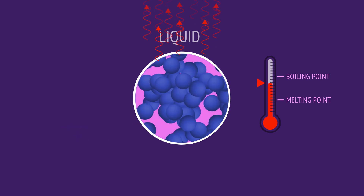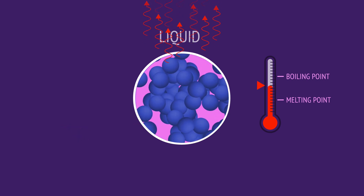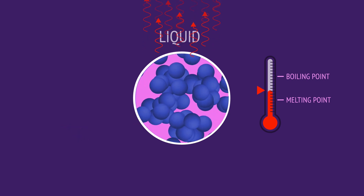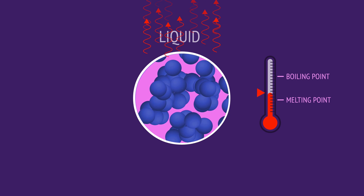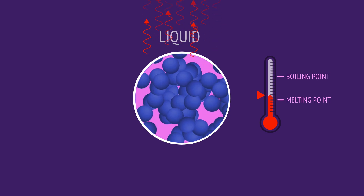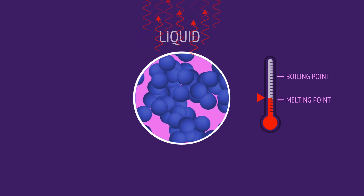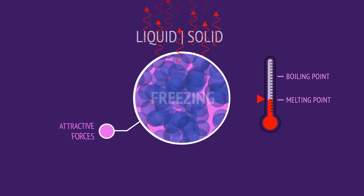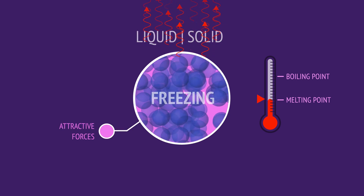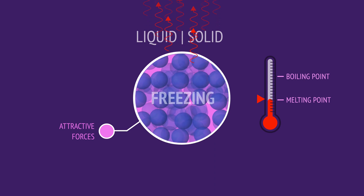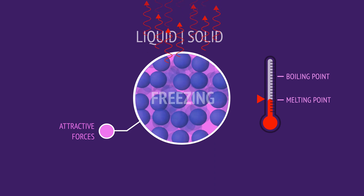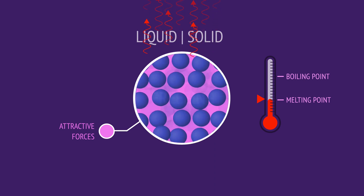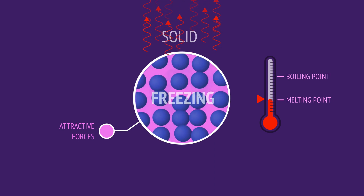When a liquid cools, heat is released, slowing down the particles and reducing the temperature. As the temperature falls to the melting point, the attractive forces will hold the particles in fixed positions, freezing the liquid into a solid.